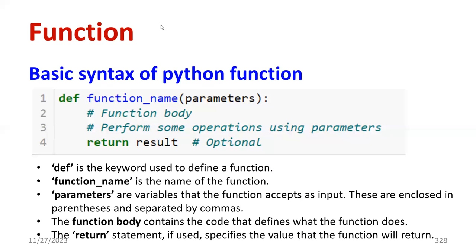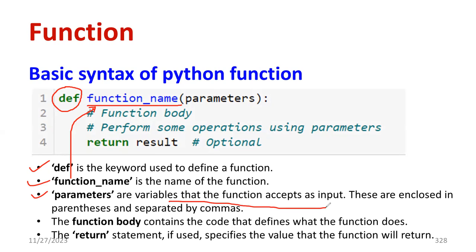I would like to explain the basic structure of a user-defined function. Usually, a user-defined function starts with a keyword called DEF, after which you can define any name that you consider as a function — that name becomes the function. Here it is very clear: DEF is the keyword used to define the function, next is the function name, and then come the parameters. Parameters are considered as arguments — whatever you type inside the brackets is known as arguments. Parameters are variables that accept the input, enclosed in parentheses and separated by commas.